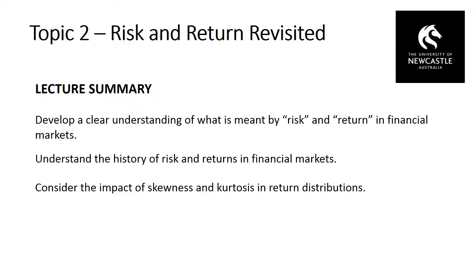Skewness refers to asymmetry in the distribution of expected returns. Imagine one axis showing all possible expected return outcomes and a vertical axis showing the probability of each outcome. In a mean-variance world, we assume returns follow a normal distribution — a bell curve — which is perfectly symmetrical. Skewness arises when there is asymmetry: a longer negative tail gives a negatively skewed distribution, while a longer positive tail gives a positively skewed return distribution.